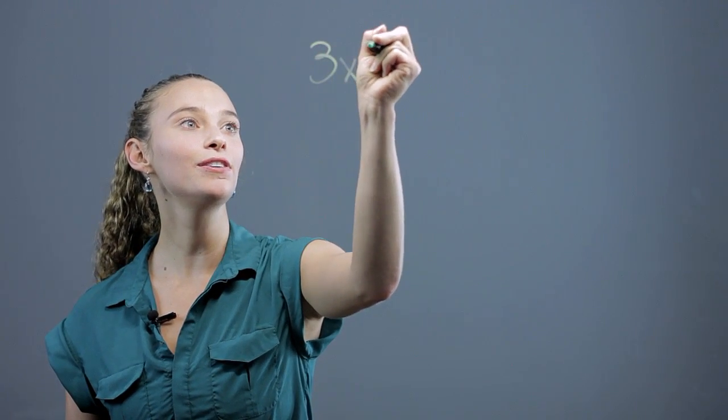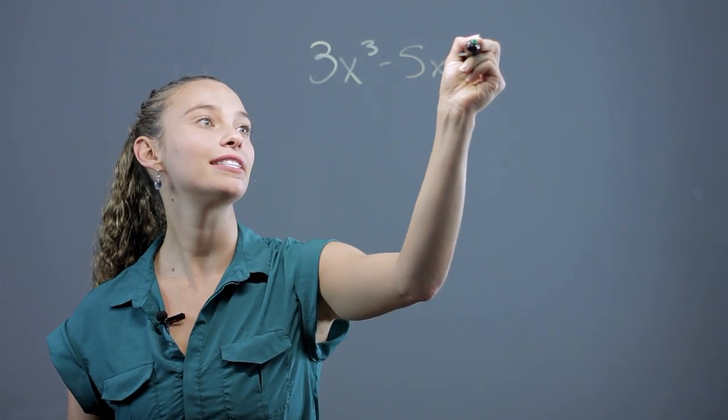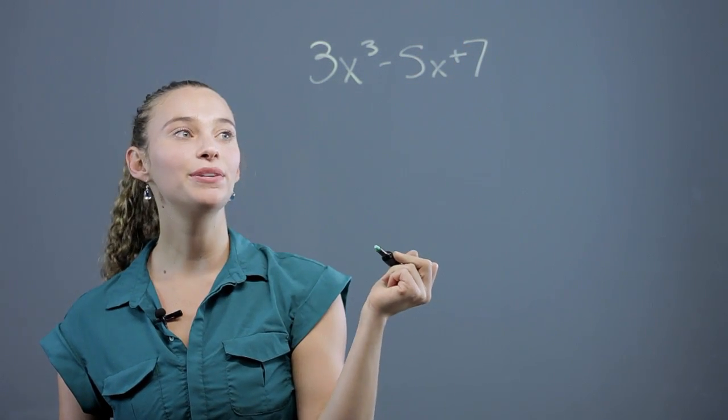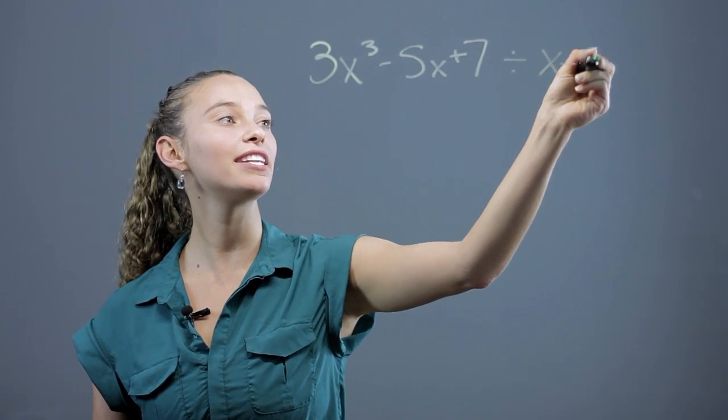Let's say we have the polynomial 3x cubed minus 5x plus 7, and we want to divide that by the polynomial x minus 2.